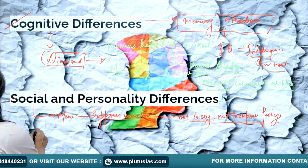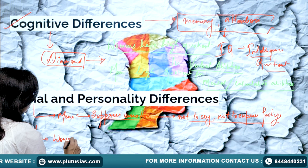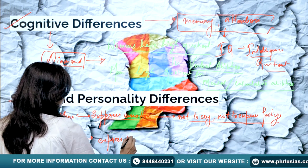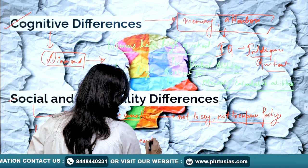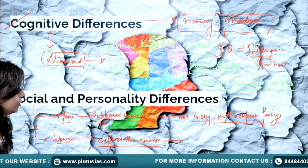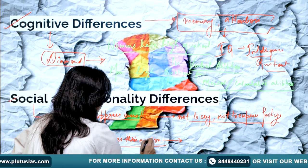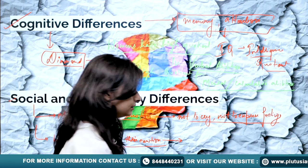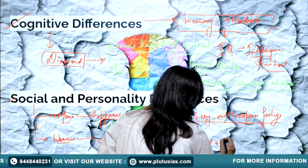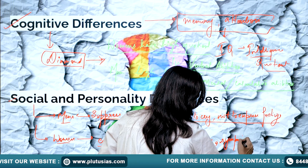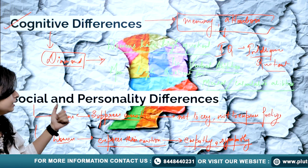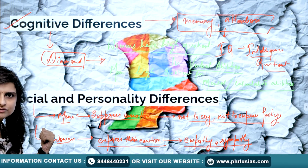Whereas women are raised in a very different manner — they are told to express their emotions. Women are encouraged to empathize, sympathize, and so on. So women are told to have empathy and show sympathy. These are the social reasons for the differences between men and women.